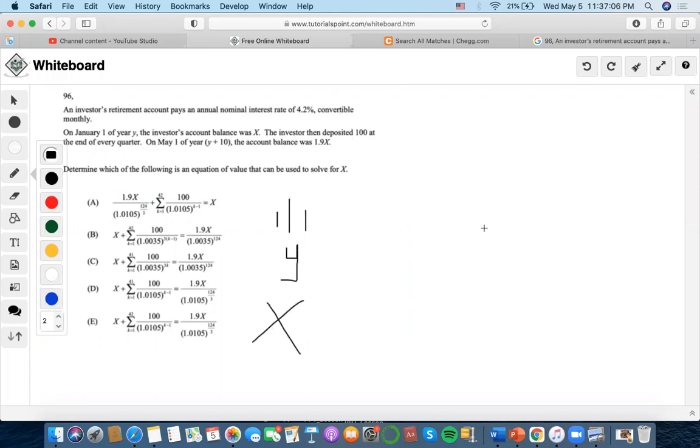And deposit 100 throughout every quarter until May 1st at year Y plus 10. The balance was 1.9x, which means that throughout every deposit, it would accumulate to this balance in that 10 years have passed.